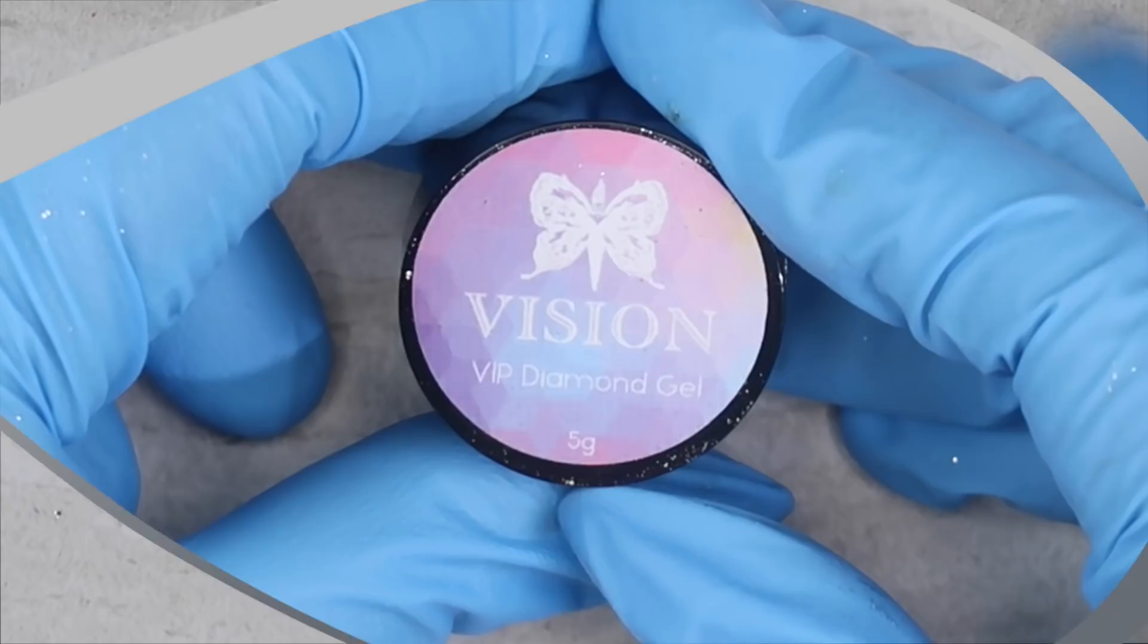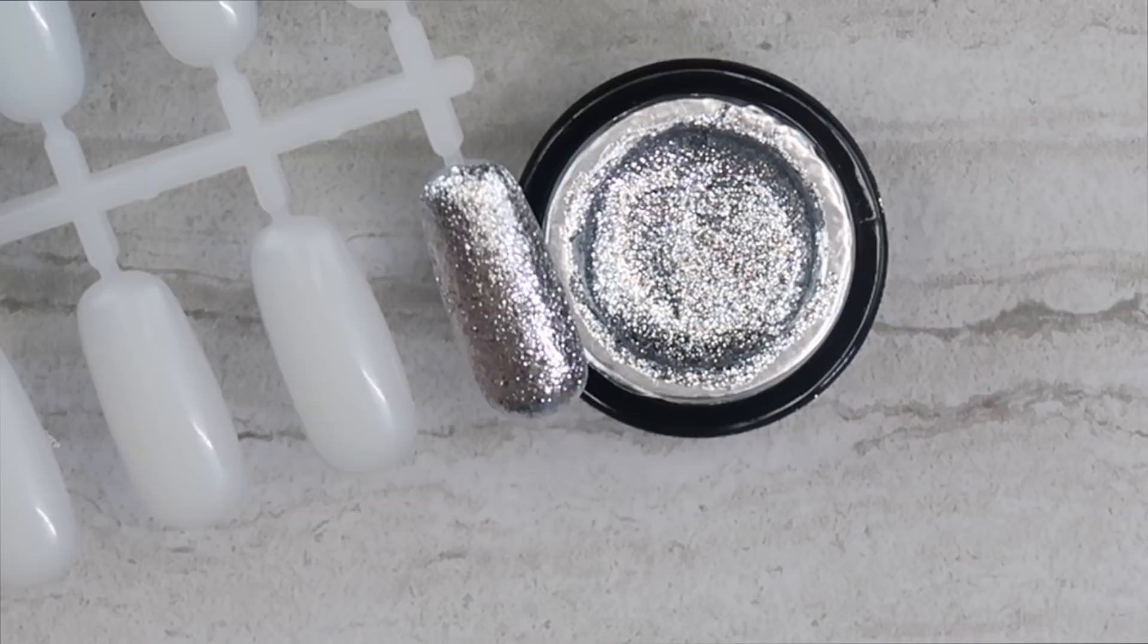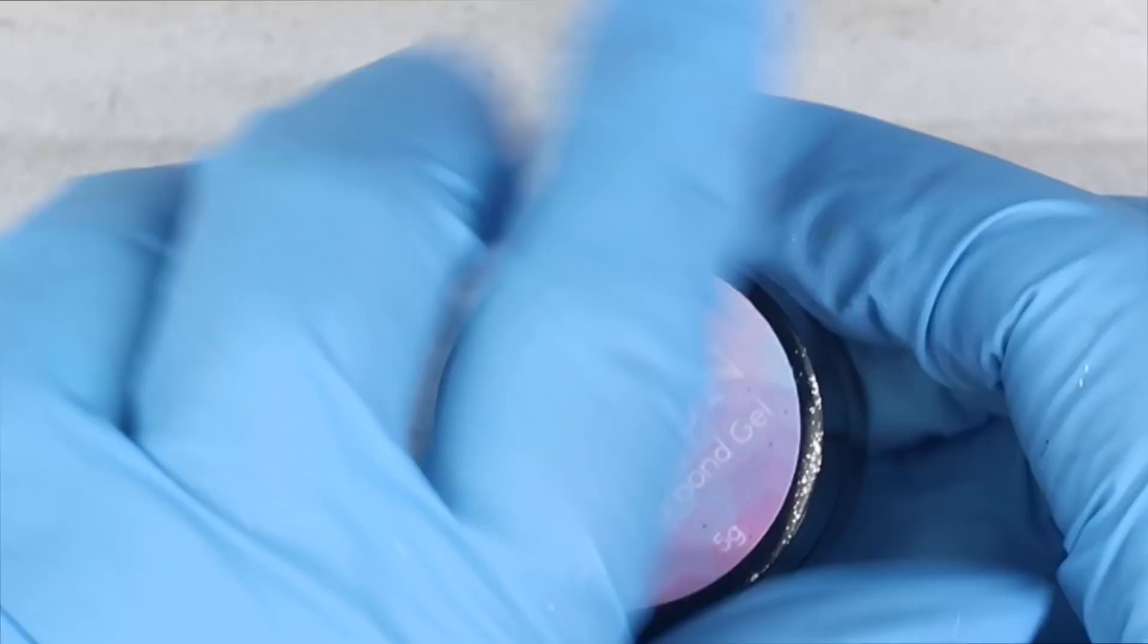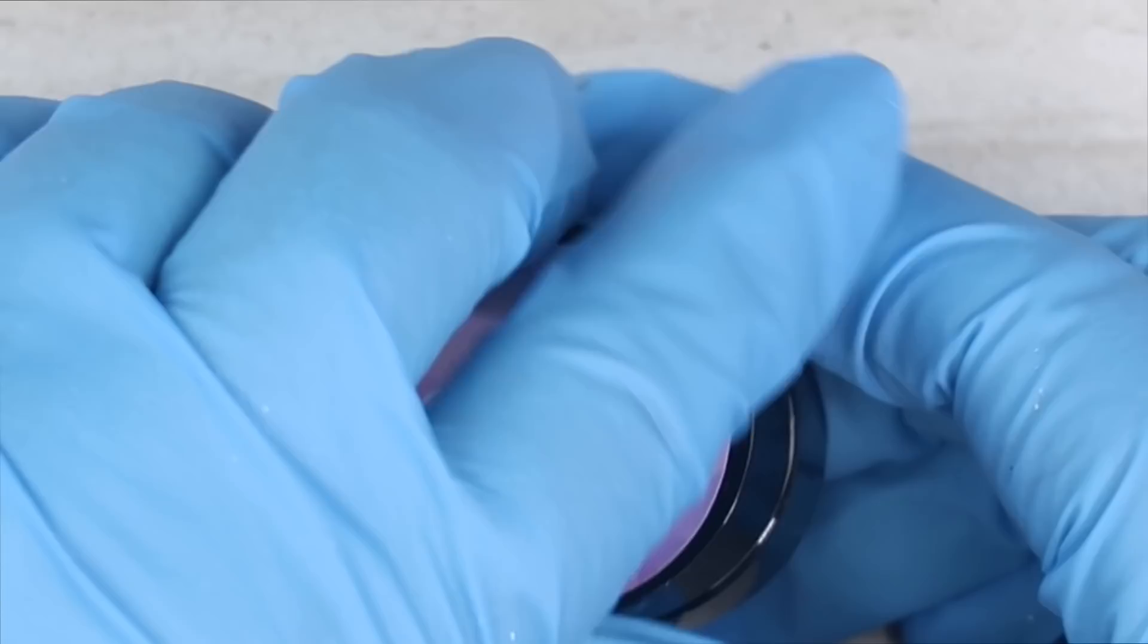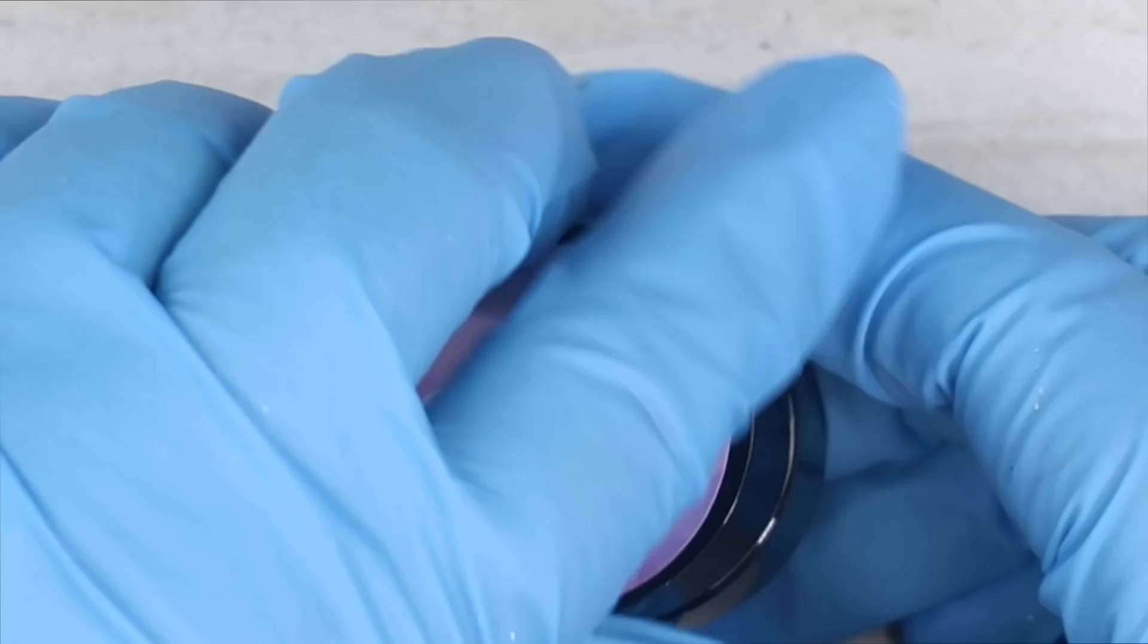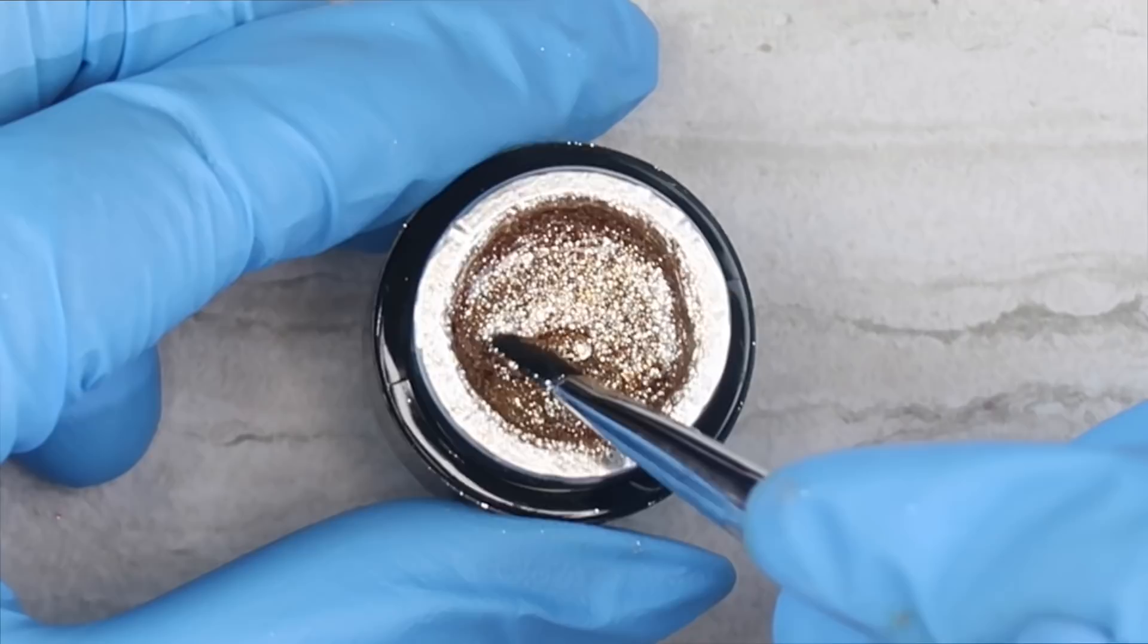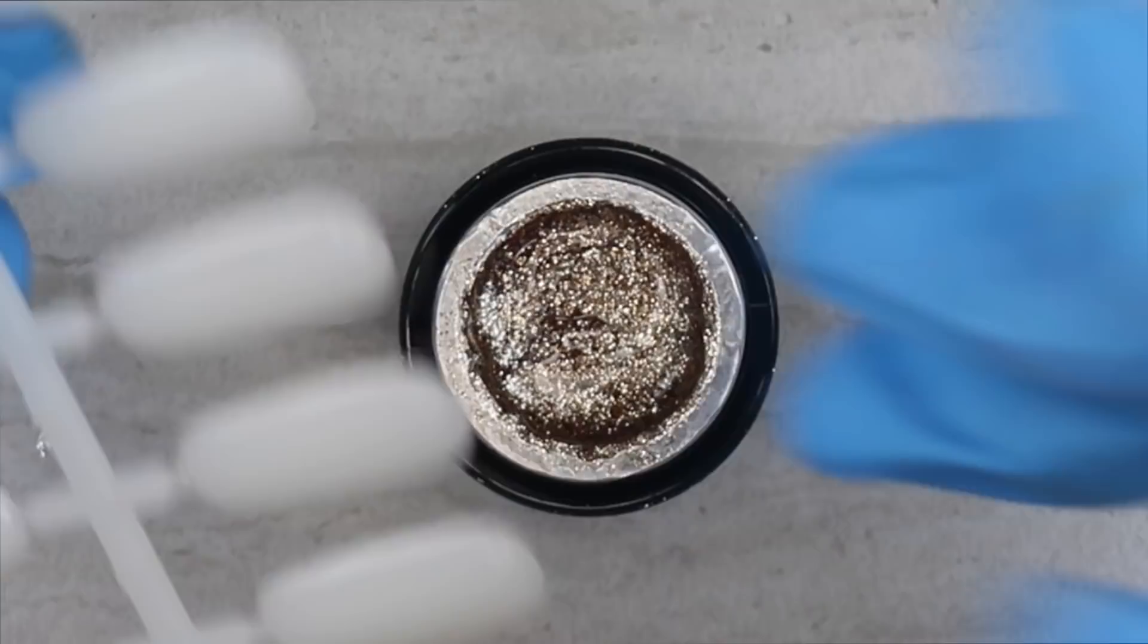The next color we're going to look at is number two. I did want to let you know that I used the no wipe top coat, the super shiny no wipe top coat, and it covers in one coat. You don't need a thicker viscosity top coat to cover this gel. Whoa, this is gorgeous. This looks like, oh man, almost looks like there's gold and silver in here, kind of like bronze maybe.